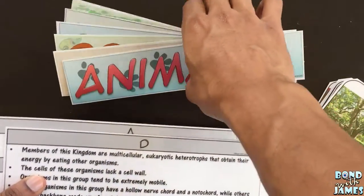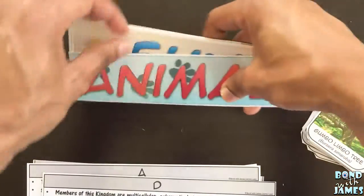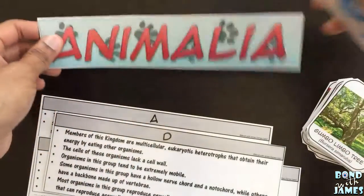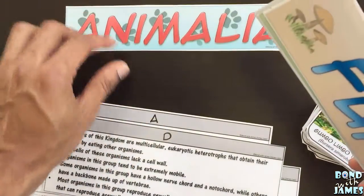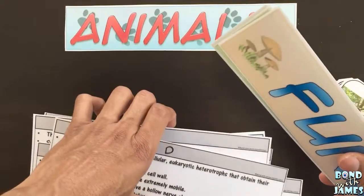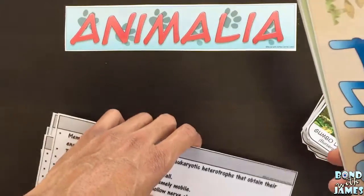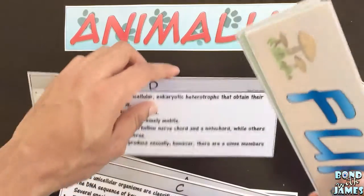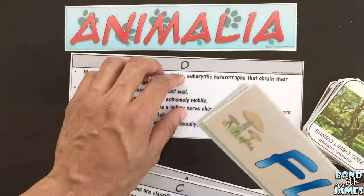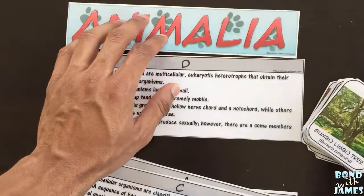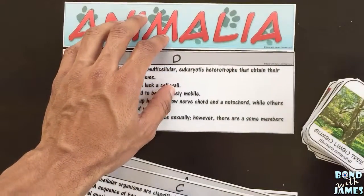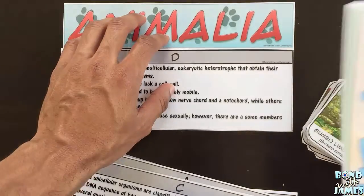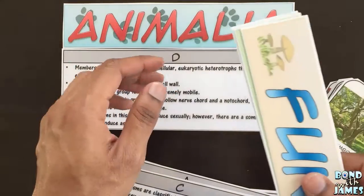The way this works is students — you can pair students up or put them in groups of four. Ideally, I would say pair them up; however, just based on resources and the number you're able to print, pairing up is fine, and putting them in groups of four is fine as well.